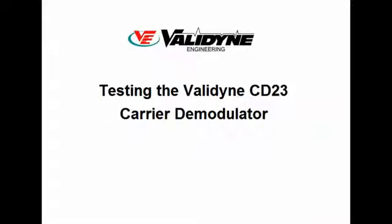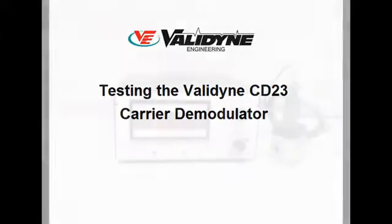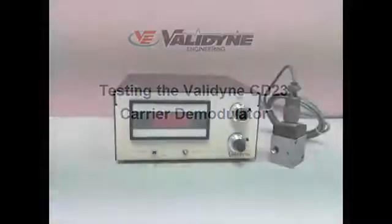The Validyne CD23 carrier demodulator features a digital display and is used in conjunction with many of our variable reluctance pressure sensors. When troubleshooting a pressure measurement system, it is helpful to know if the CD23 is functioning normally. This short instructional video will show you how to test your CD23 to verify that it can be used to calibrate a variable reluctance pressure sensor.